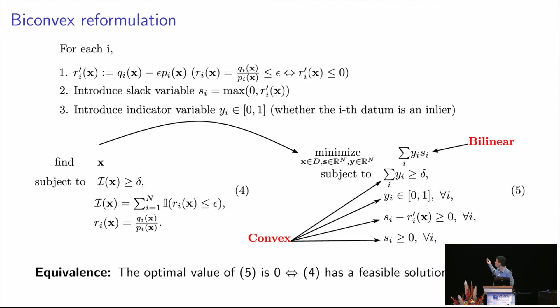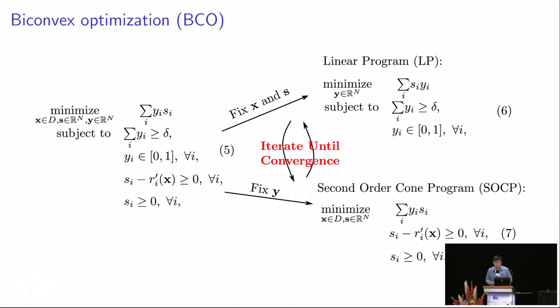The biconvex optimization performs like this. We first fix one part of the variables, x and s, and optimize over y. This gives us a linear program. And then we fix y and optimize over x and s, which gives us a second order cone program. Both these two problems can be efficiently solved into global optimal by standard solvers. Therefore, we now have a way to solve the update problem efficiently, although we don't guarantee any global optimality. But we will show now that our algorithm performs well in practice.